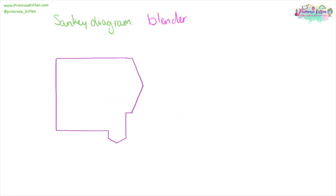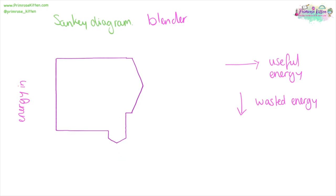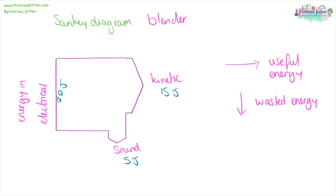When we want to visually show the efficiency of something, we can use a Sankey diagram. On one side we have the energy going in, in one direction is the useful energy, and another direction is the wasted energy. In our example of a blender, the energy going in is electrical energy, the useful energy coming out is kinetic energy, and the wasted energy is sound energy. We use graph paper so we can put numbers on it — 20 squares could be 20 joules, 15 squares could be 15 joules, and 5 squares could be 5 joules. The key thing is to count the number of squares, or if sketching, make sure it is roughly in proportion.